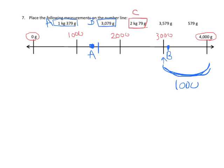We've got 2 kilograms plus an extra 79 grams. So that means we're going to mark it. Oh, that's close enough right there. And then let's do D. Let's call this D. So that's 3,579 grams. So we're already at the 3,000. That's pretty easy.